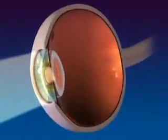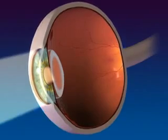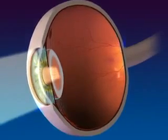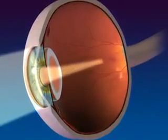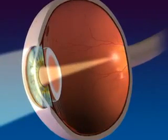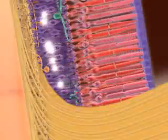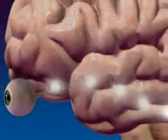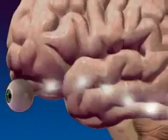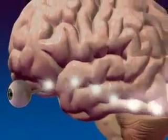Light rays enter the eye through the cornea, pupil, and lens, where the light rays are bent or refracted to focus them on the rods and cones, which transmit the stimulus to the optic nerve and then to the occipital lobe of the brain for interpretation.